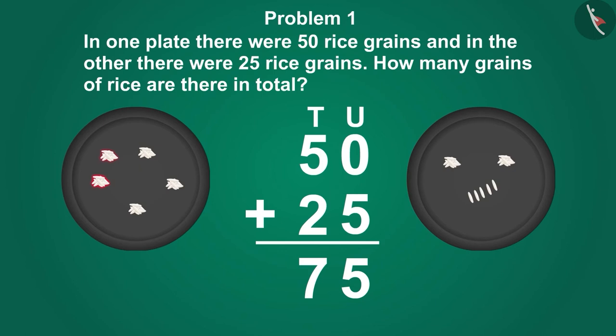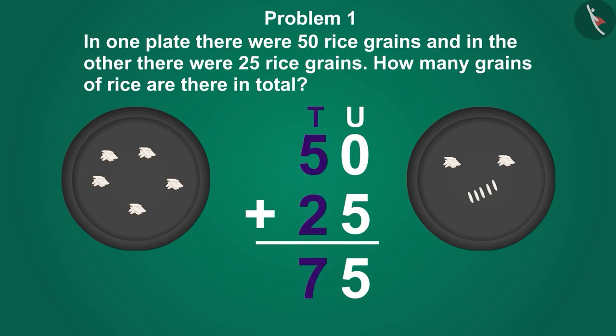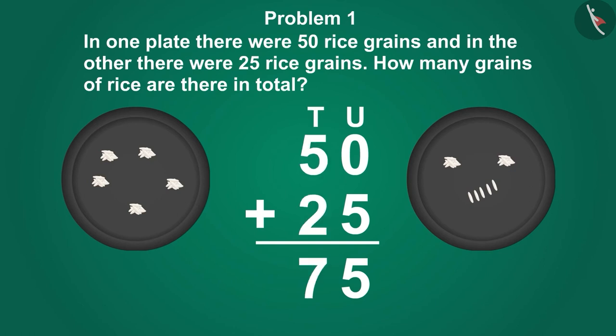1, 2, 3, 4, 5, 6, and 7 piles of rice — this means our answer is correct. Now we will write 7 under the tens section like this. Children, the correct answer to this question is 75. Gaffey has also written the correct answer, just like you.